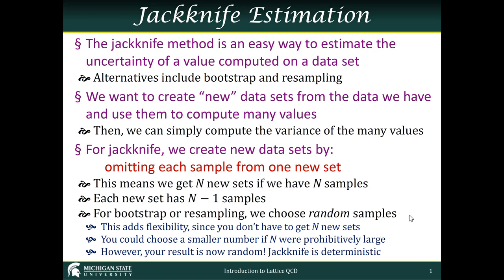In the jackknife method, we create new datasets in a very simple way. We take our dataset and we knock one sample out of it. For each sample, we create one new dataset by knocking that sample out. That means we have n new datasets if we started out with n samples, and each of the new datasets is going to have n minus 1 samples.